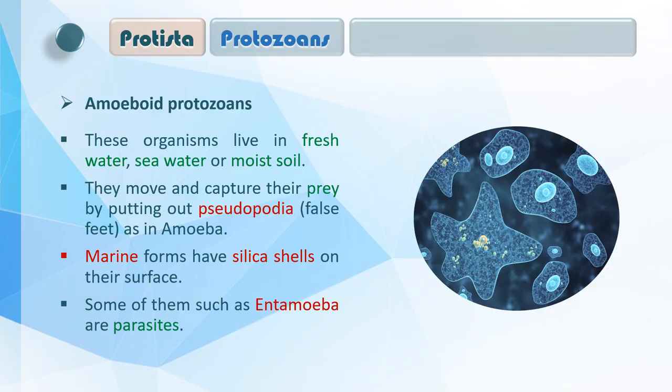Marine forms have silica shells on their surface। आप जानते हैं कि यह organism fresh water के साथ-साथ marine water में भी पाया जाता है। तो जो marine variety है Amoeboid protozoas की, उनके अंदर silica shells होती हैं। Some of them, such as Entamoeba, are parasites — Entamoeba histolytica host के अंदर जाता है और उनमें diseases करता है।